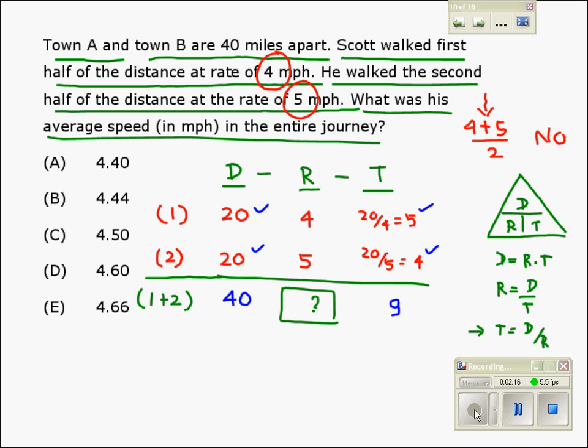Now at this stage, the rate can be found by using the formula distance over time, which is 40 over 9. This should give us the answer. Doing the division, it comes out to 4.44. Thus, option B is the right answer. Thank you.